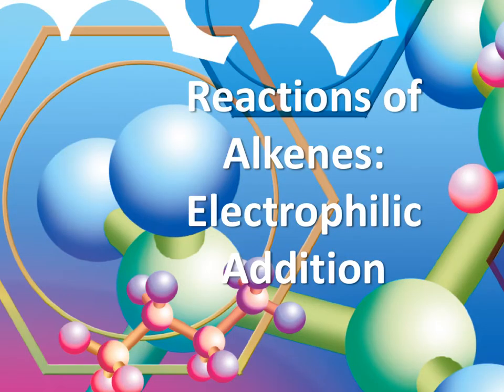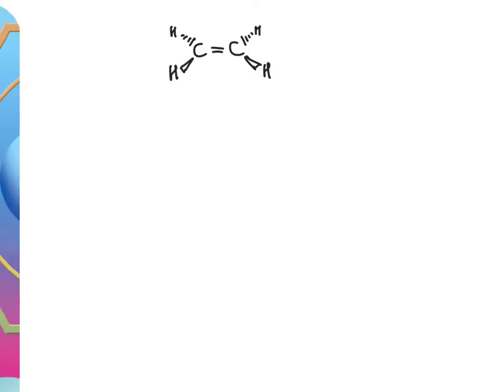We're now going to consider the reactions of alkenes. Alkanes undergo free radical substitution; haloalkanes undergo nucleophilic substitution or elimination; and now with alkenes, they undergo electrophilic addition. We need to start by understanding the functional group of an alkene, which is the carbon–carbon double bond.